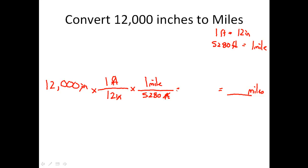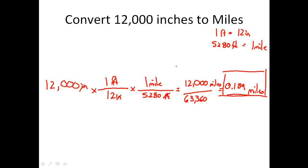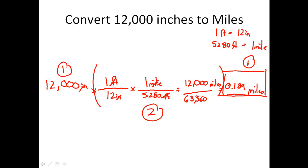Now solve: 12,000 times 1 times 1 equals 12,000 on the top. On the bottom, 12 times 5,280 equals 63,360. So 12,000 divided by 63,360 gives 0.189 miles. So 12,000 inches sounds far, but it's not even a fifth of a mile. Steps recap: givens, conversion factors, units cancelled out, then do the math.